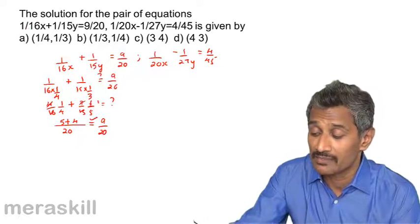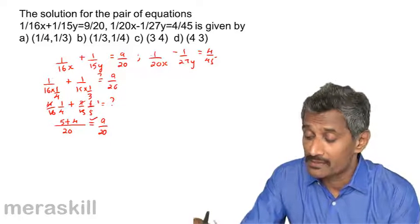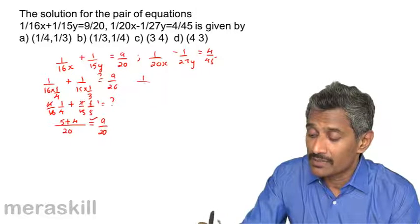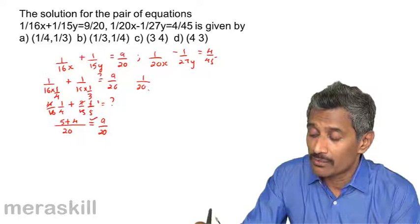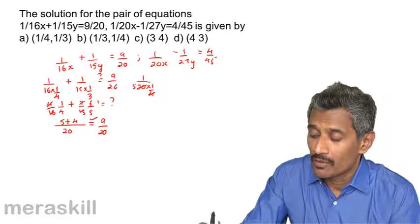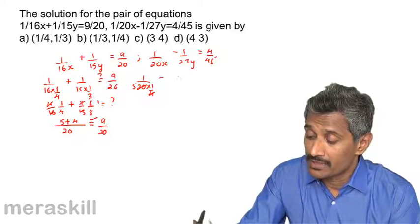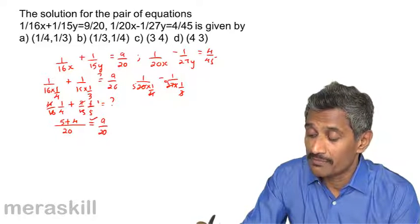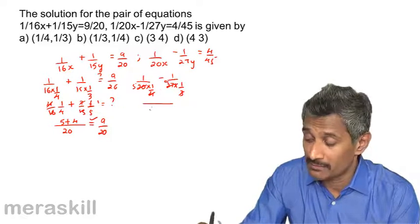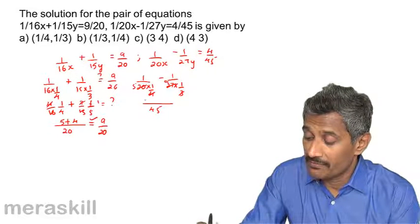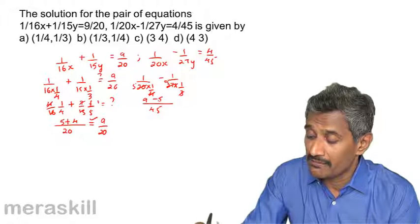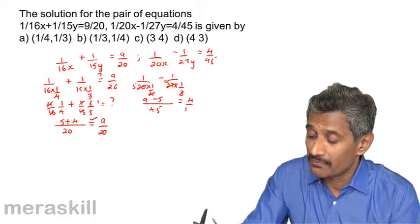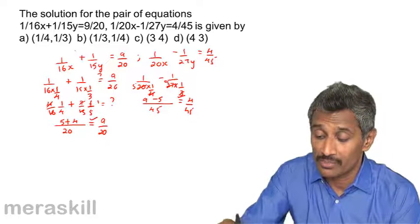Now check the second equation: 1 by (20 times 1 by 4) minus 1 by (27 times 1 by 3) equals 1 by 5 minus 1 by 9. Taking LCM 45: 9 by 45 minus 5 by 45 equals 4 by 45. This satisfies the second equation too, so the solution is confirmed.